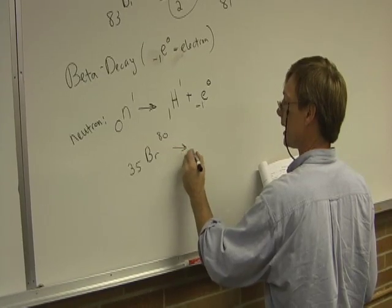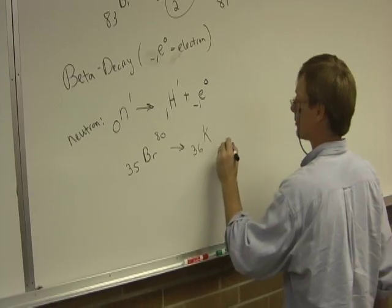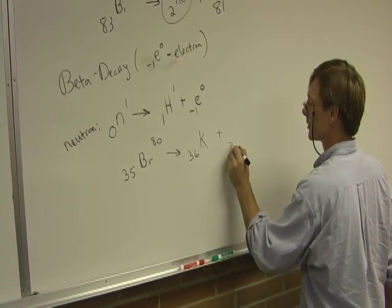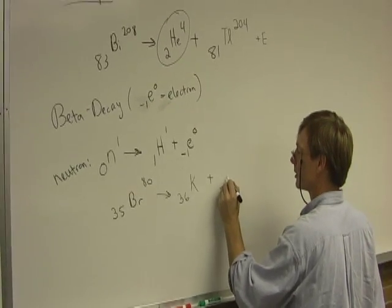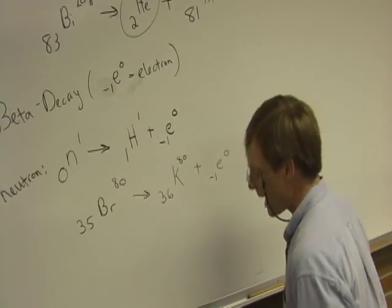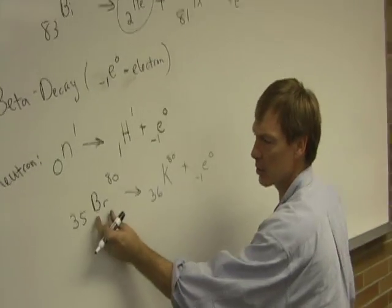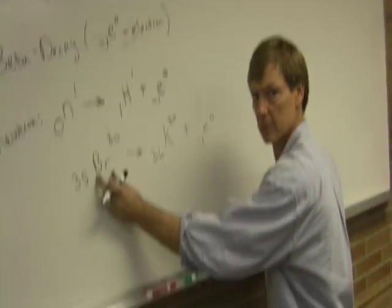And that's going to decay to a krypton, which is one higher. I don't know what the rest is. Let's see. Plus an electron. Minus 1 is 0. So it's going to decay to krypton 80. Now what happens here is a neutron in the nucleus of the bromine became a proton and an electron. The electrons aren't allowed in the nucleus. It got spit out. The proton remained.